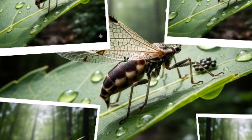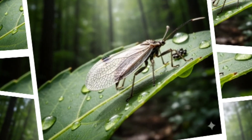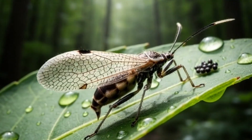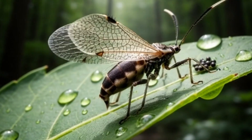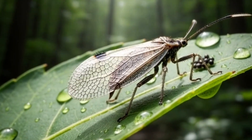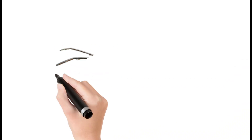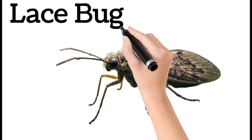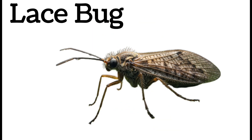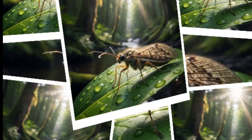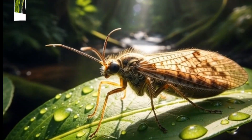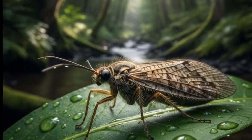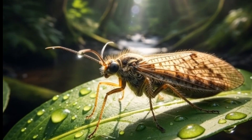Caddisfly lives near fresh water. Adult forms fly during night. Important for aquatic ecosystems. Next, lace bug: tiny insect with lace-like wings. Feeds on plant sap, leaving white spots on leaves. Found on shrubs and trees. Moves slowly but spreads fast.